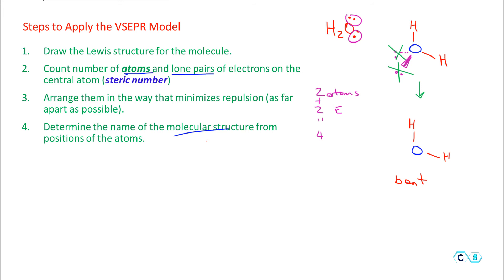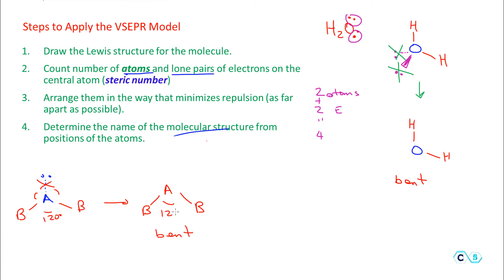The bent geometry can result from different electronic geometries. For example, a central atom with one lone pair and two terminal atoms gives an electronic geometry of 120 degrees; discarding the lone pair still gives a bent molecular geometry, but at 120 degrees. Compare this to water, which is also bent but at about 109 degrees. So there is no single fixed angle for bent — it depends on the electronic geometry of the molecule.